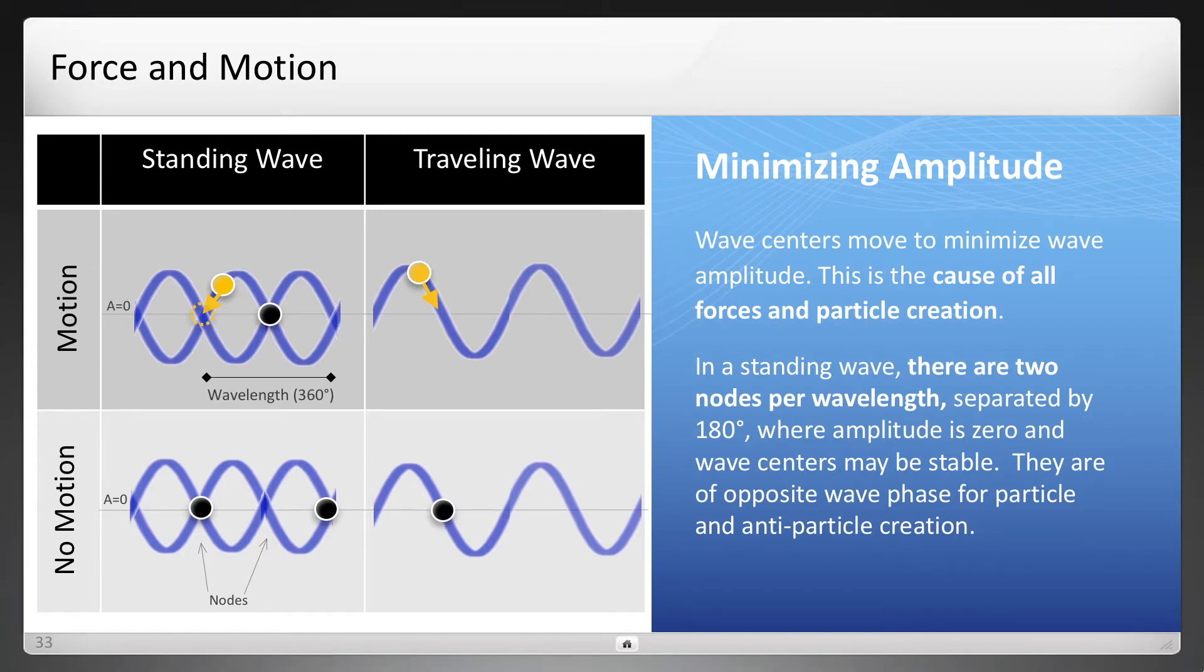In a traveling wave, it's going to be a combination constructive or destructive wave interference. And its rule is still going to be to minimize wave amplitude, but it may not necessarily always be the point where amplitude is zero. Yet it will still be the same rule of minimizing wave amplitude.